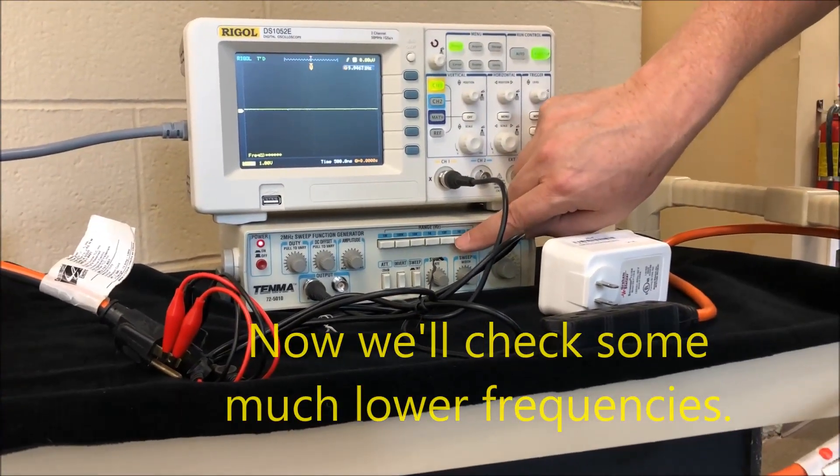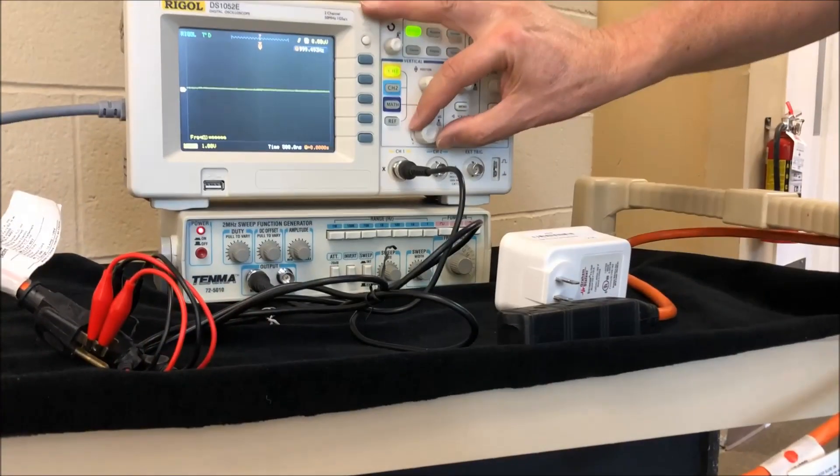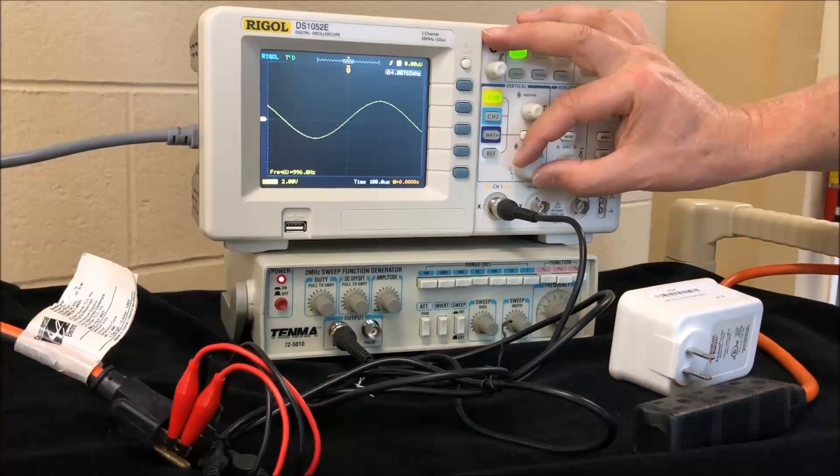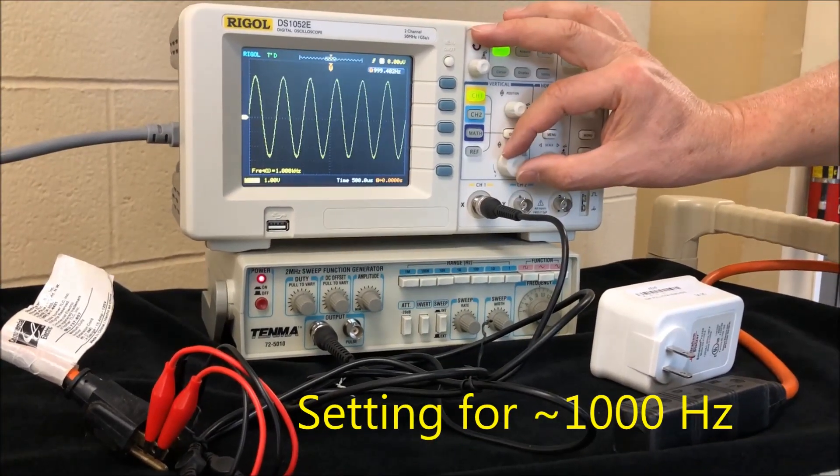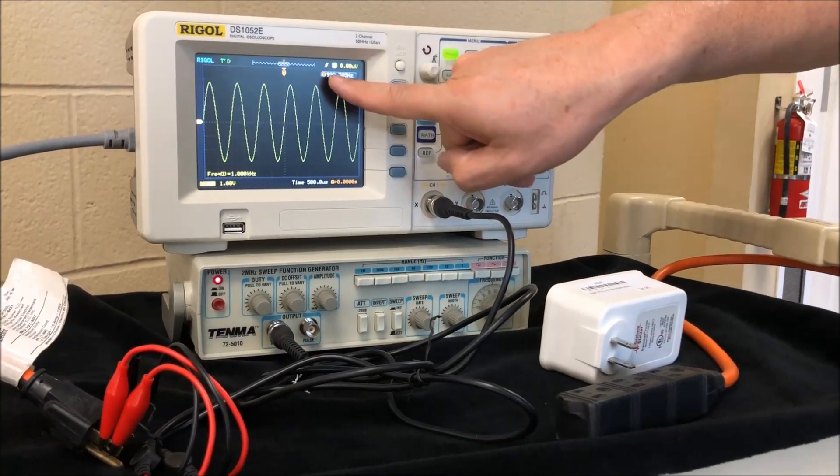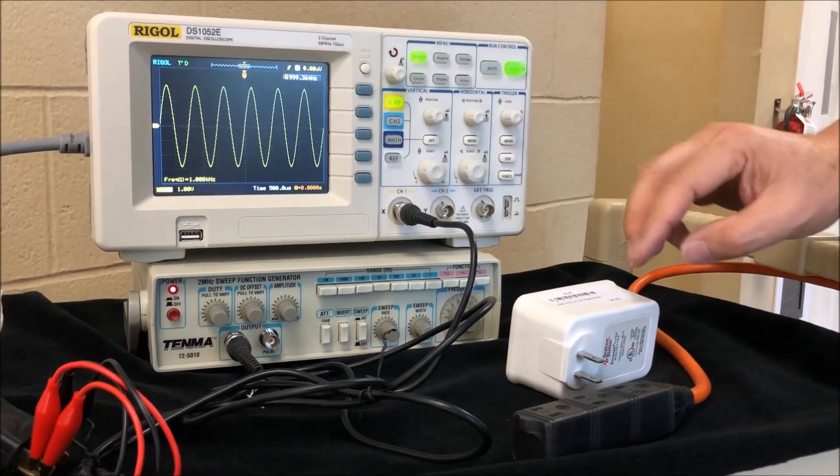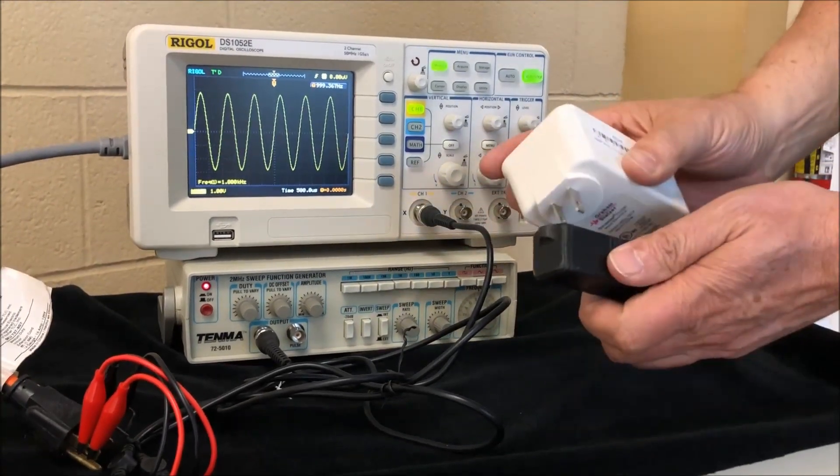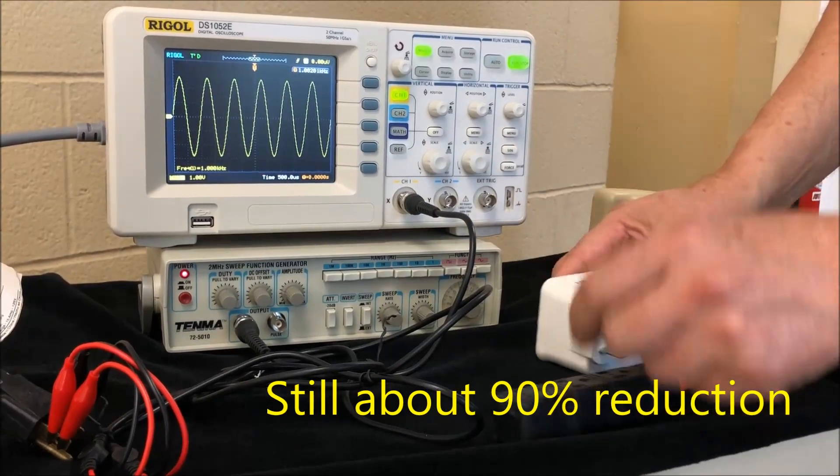Let's check some much lower frequencies now. So here we're going to adjust it. We're going to be working at about 1 kilohertz, 1,000 hertz. There we can see the waveform. 1 kilohertz. And we plug in the filter. There we go. We can see the reduction, about 90% reduction.